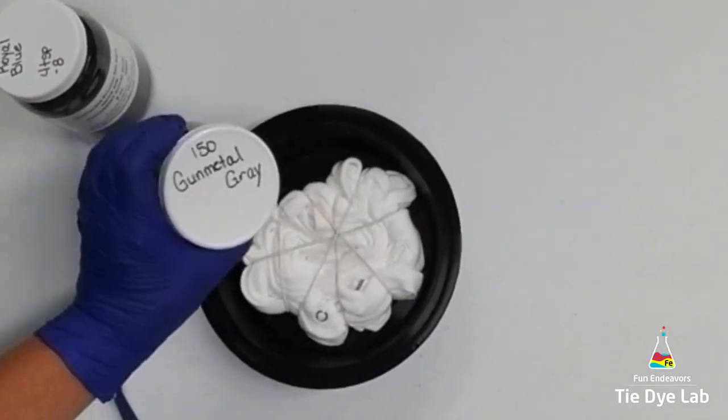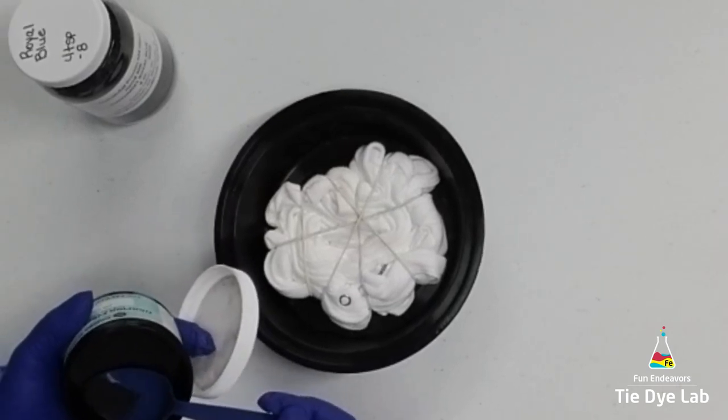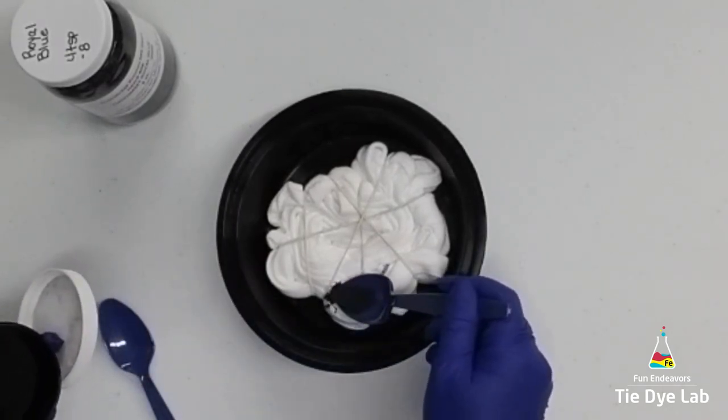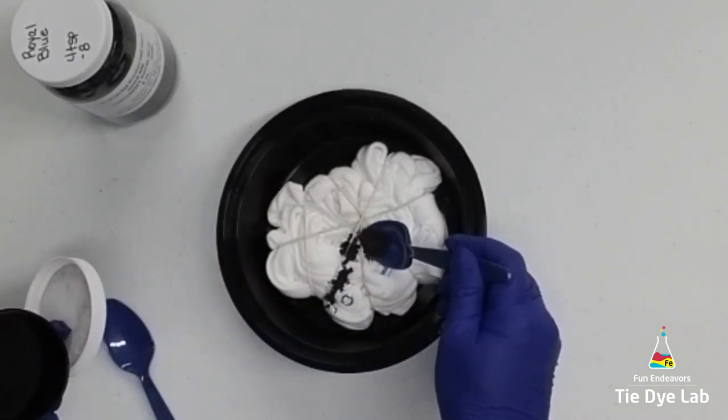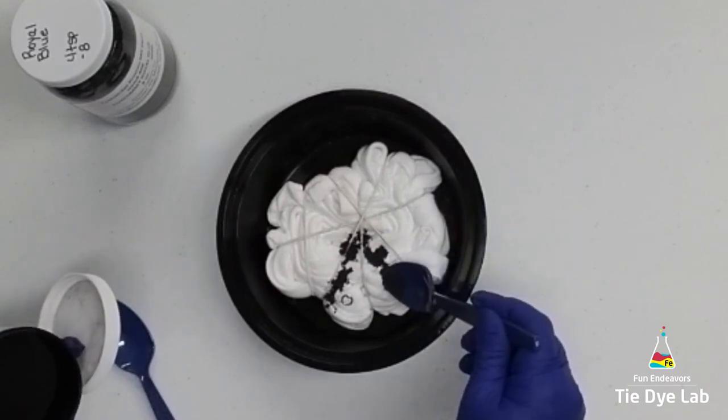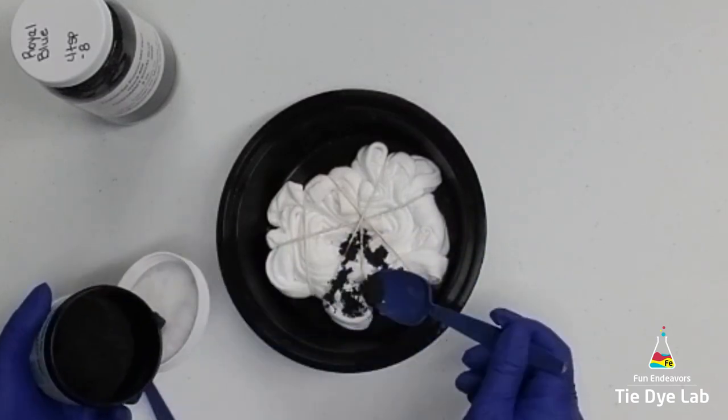I'm going to dye this onesie down in the muck, and for this one I'm going to use two colors. I'm going to use Gunmetal Gray from Dharma Trading Company, and I'm going to apply it in two pie portions across from each other.